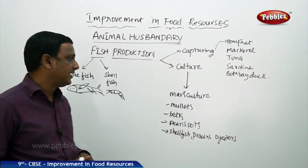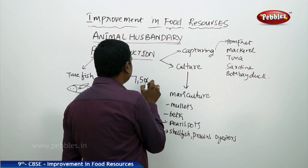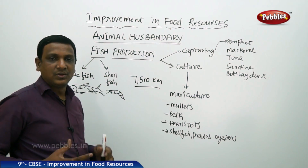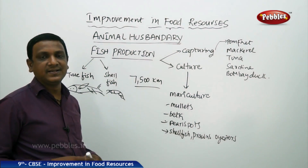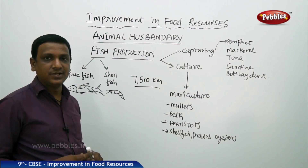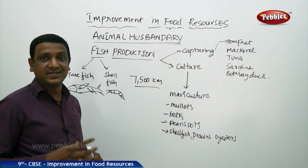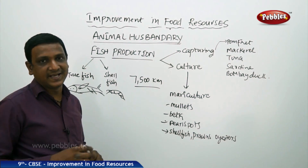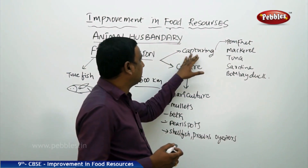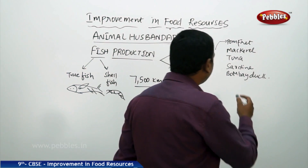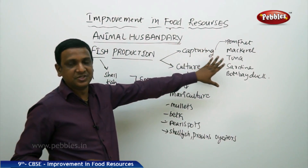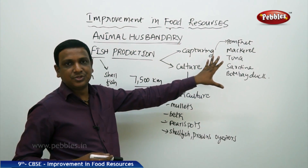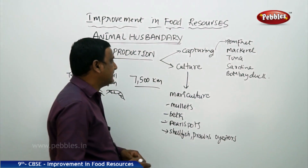India is a country surrounded by seas on three sides, with seven thousand five hundred kilometers of coastline, giving plenty of access for fishermen to go on boats and catch fish. Mechanical boats are used, and fishermen use satellites and echo sounders to find where schools of fish are located. Popular marine fishes captured and sold with good commercial value include pomfret, mackerel, tuna, sardines, and Bombay duck.